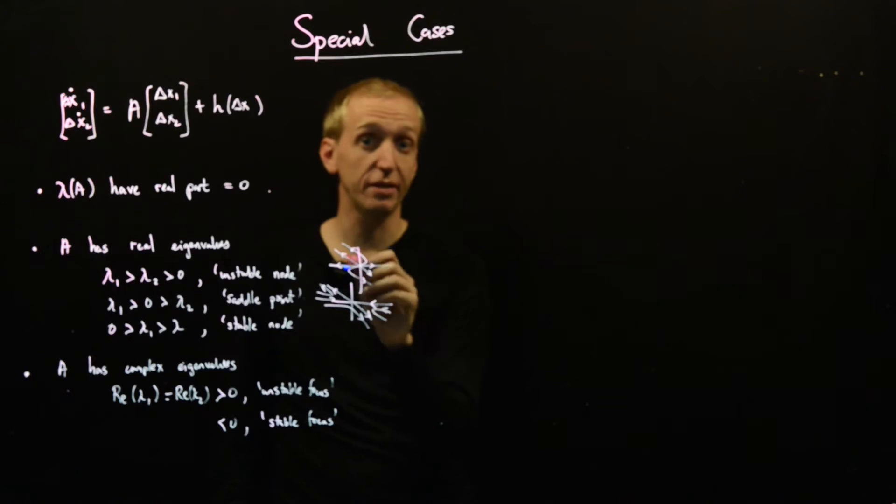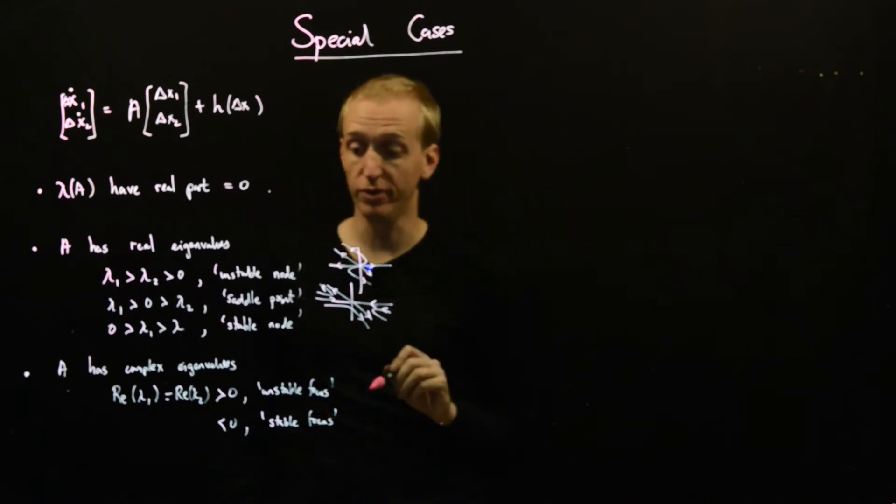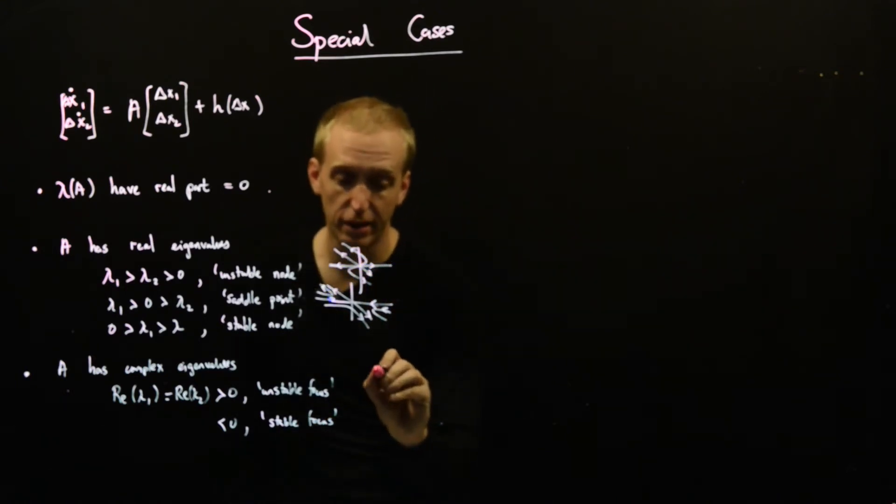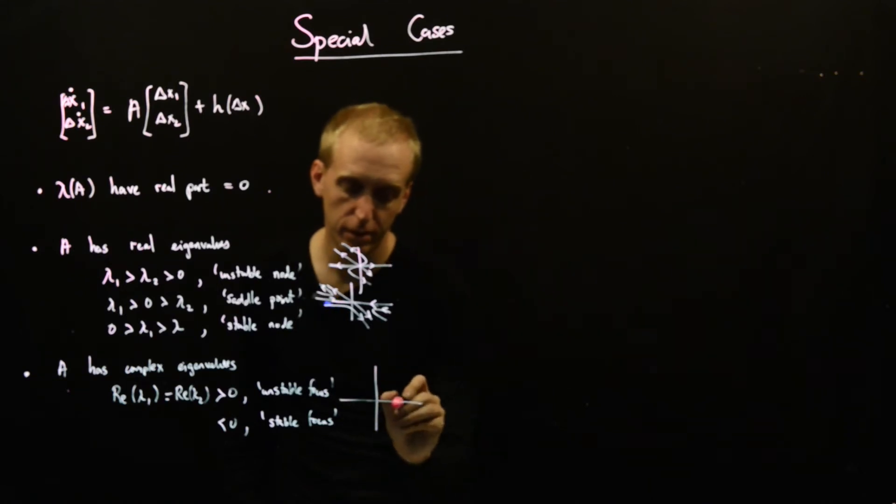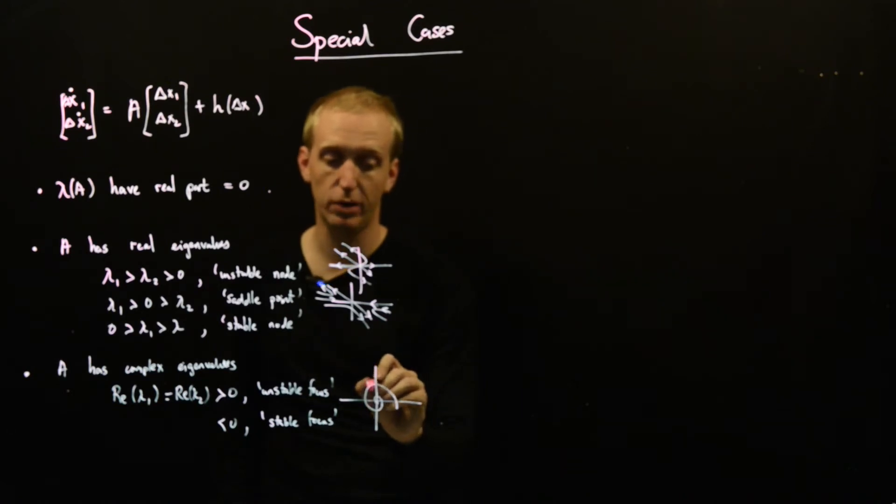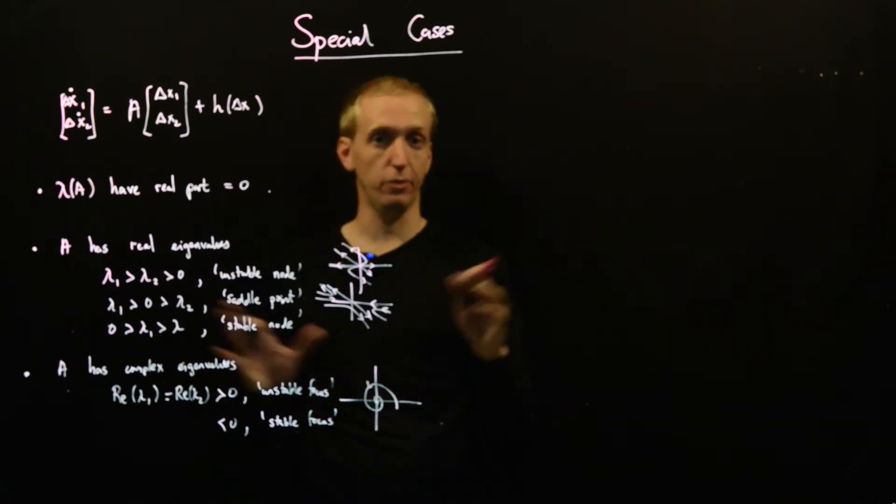And then stable node was the same as the unstable node, but with the arrows reversed. And finally, for the foci, you had a spiraling behavior. And if it's stable, it spirals into the equilibrium point, otherwise it spirals away.